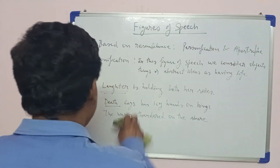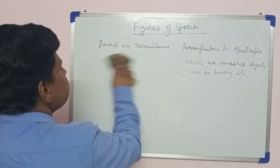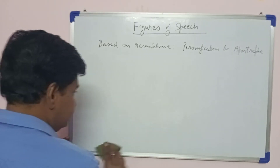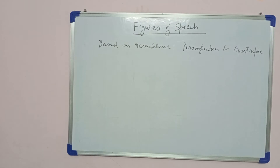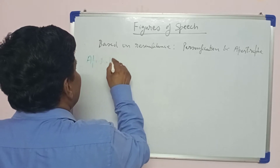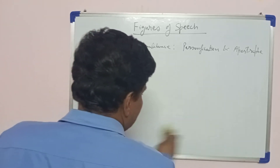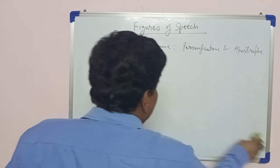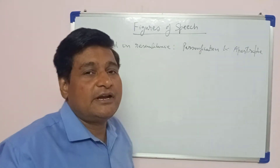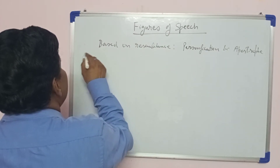Let us understand what apostrophe is. Apostrophe is a special type of personification. Here, things are addressed — dead persons are addressed as though they are having life. This is actually the fourth figure of speech in line.